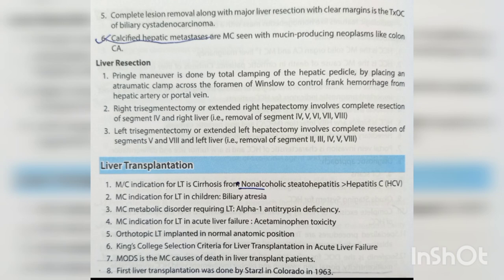Liver resection: Pringle maneuver is done by total clamping of the hepatic pedicle by placing an atraumatic clamp across the foramen of Winslow to control hemorrhage from the hepatic artery or portal vein. Right trisegmentectomy (extended right hepatectomy) involves resection of segments 4, 5, 6, 7, and 8. Left trisegmentectomy (extended left hepatectomy) involves removal of segments 2, 3, 4, 5, and 8.